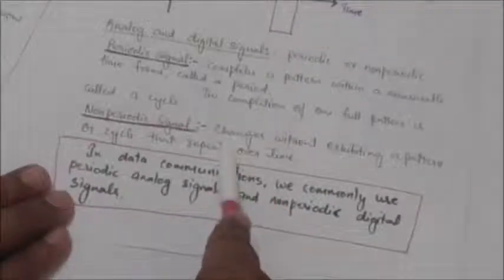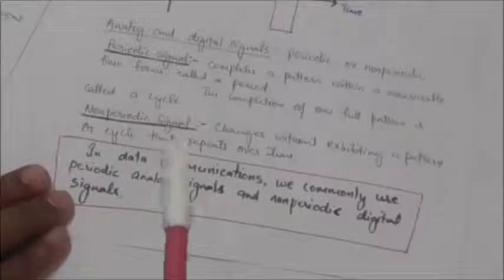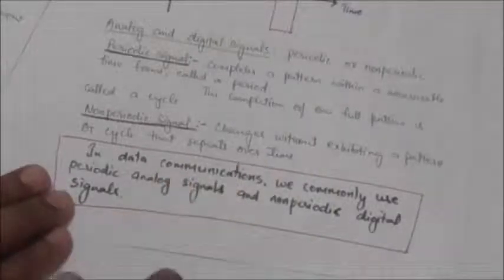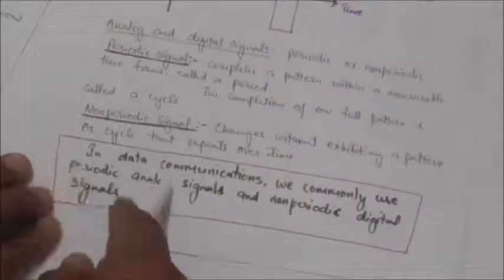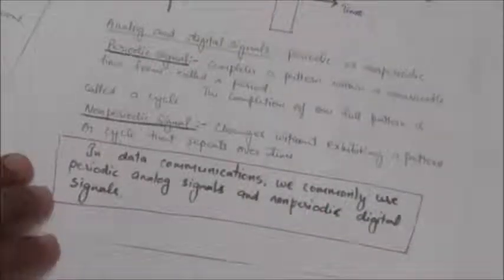A non-periodic signal changes without exhibiting a pattern or cycle that repeats over time. In data communication, we commonly use periodic analog signals and non-periodic digital signals.